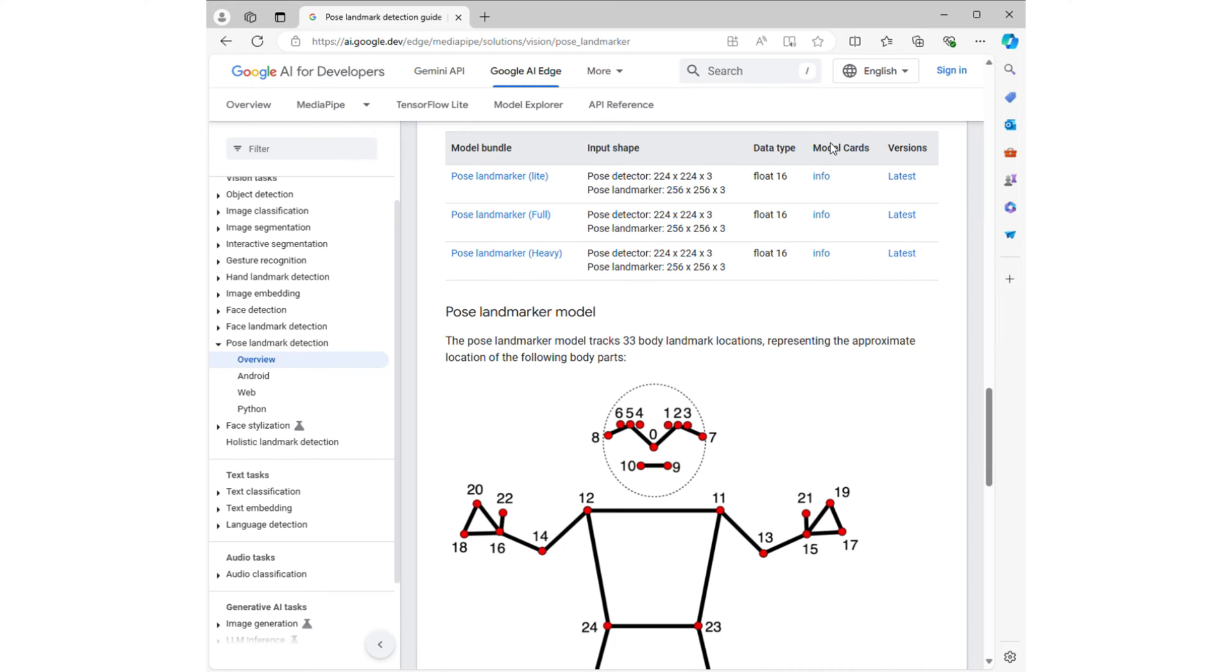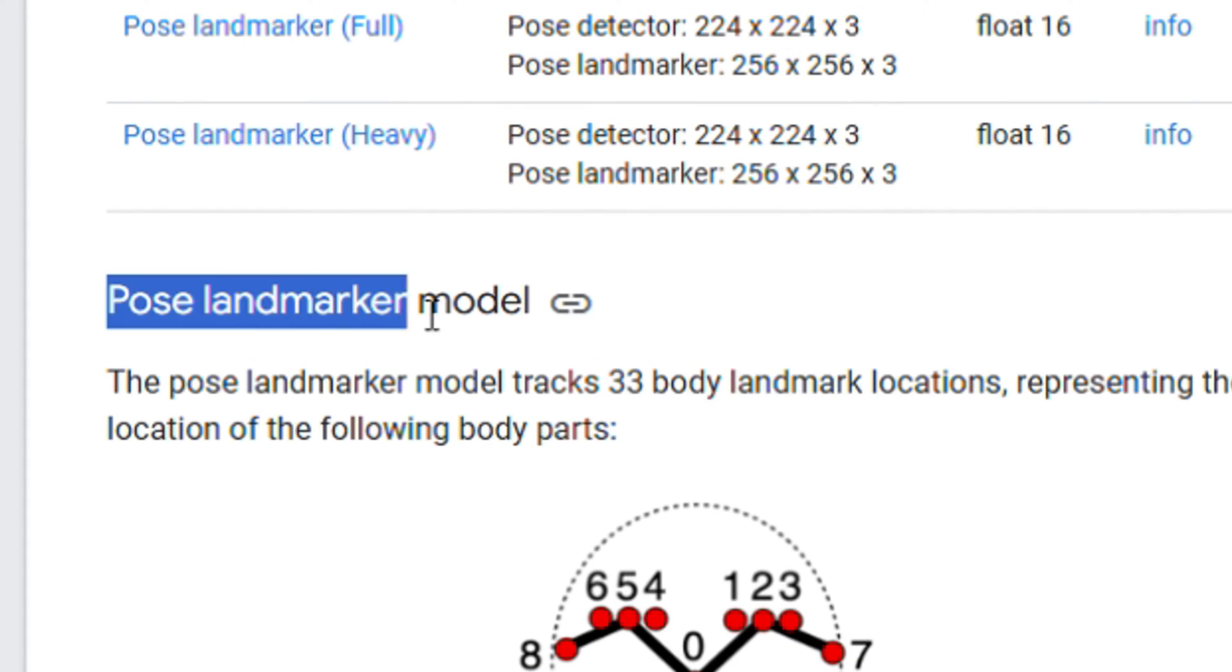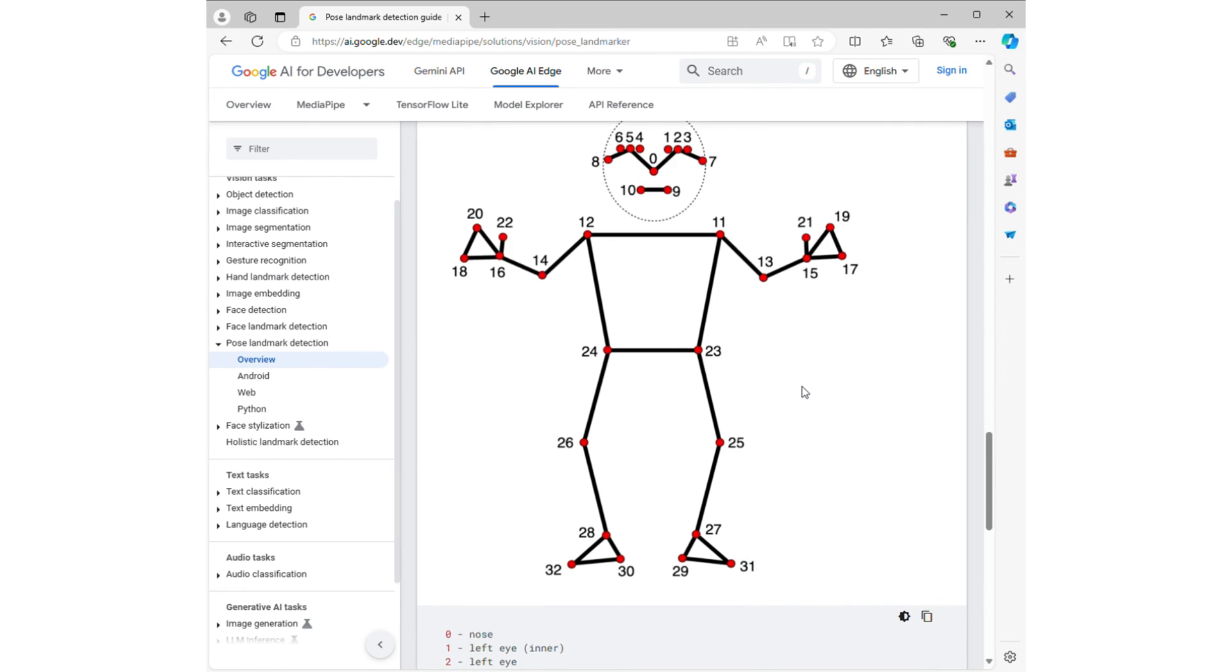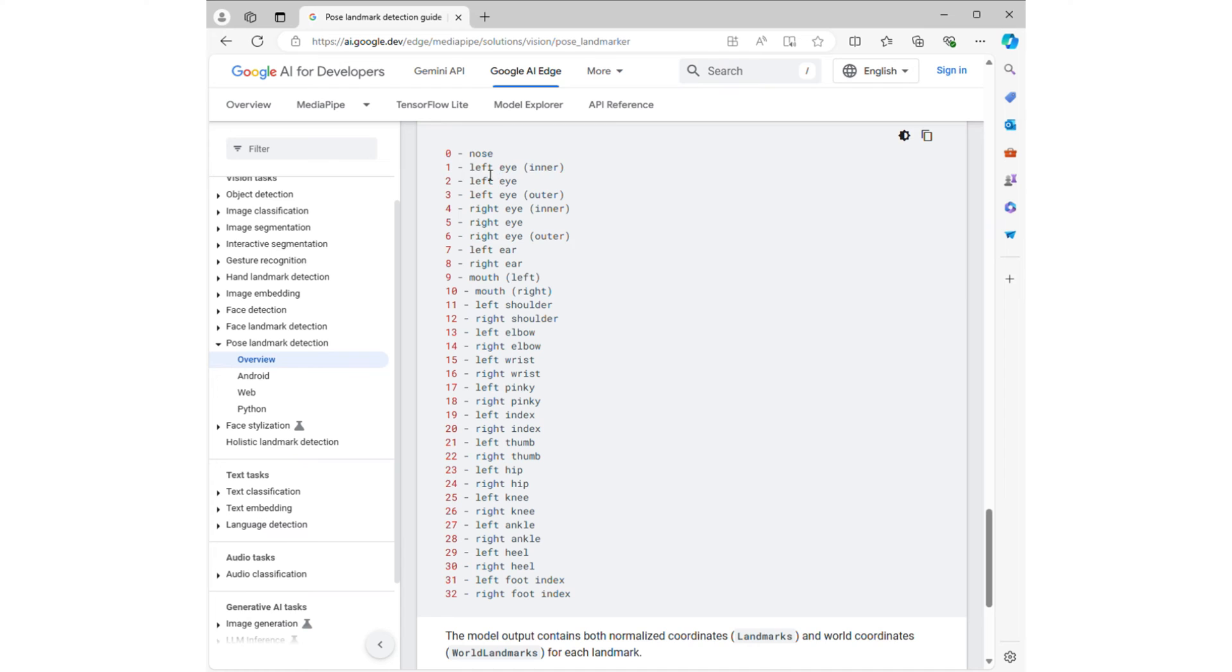According to the Google AI MediaPipe solution documentation, the pose landmark model can detect 33 body landmark locations, including the nose, inner corner of the left eye, inner corner of the right eye, left foot index, and right foot index. These landmarks help identify the body's pose.